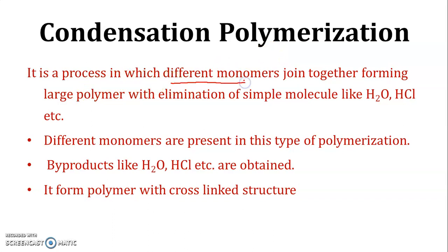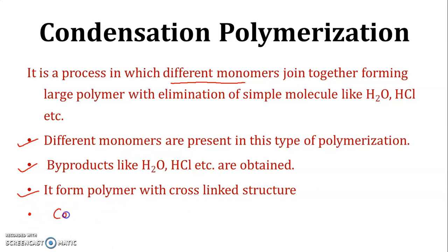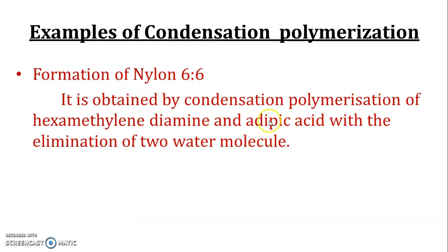Next, condensation polymerization: it is the process in which different monomers join together forming a large polymer with elimination of a simple molecule like water, HCl, etc. Different monomers are present in this type of polymerization, byproducts like water and HCl are obtained, and the polymer formed has a cross-linked structure. Since two different types of monomers are present, a copolymer is formed.